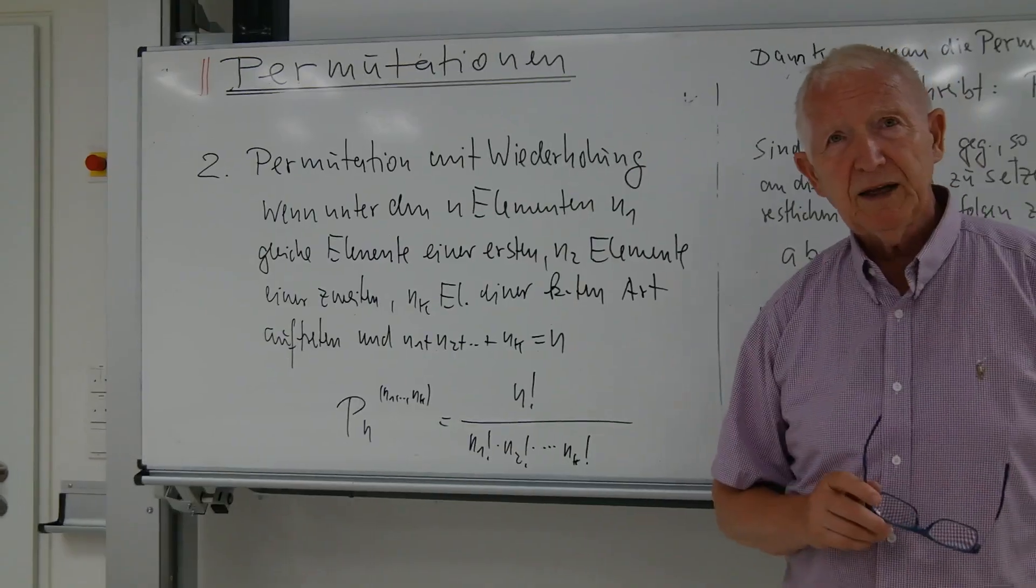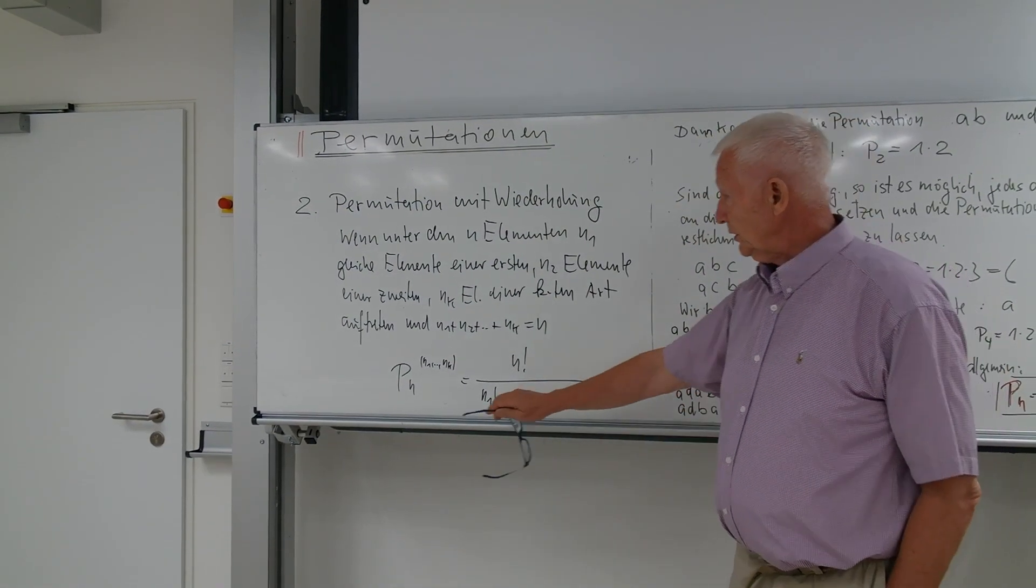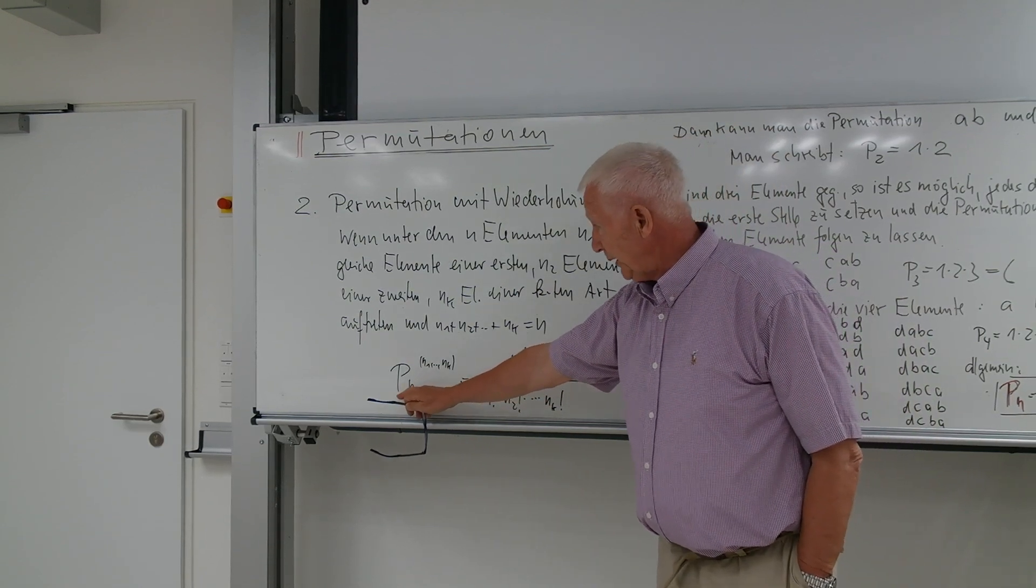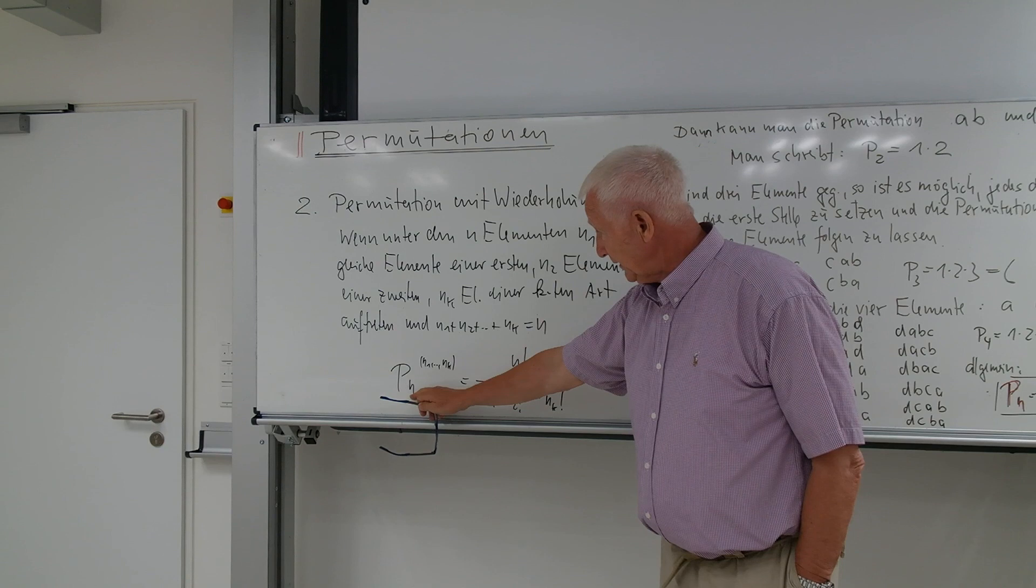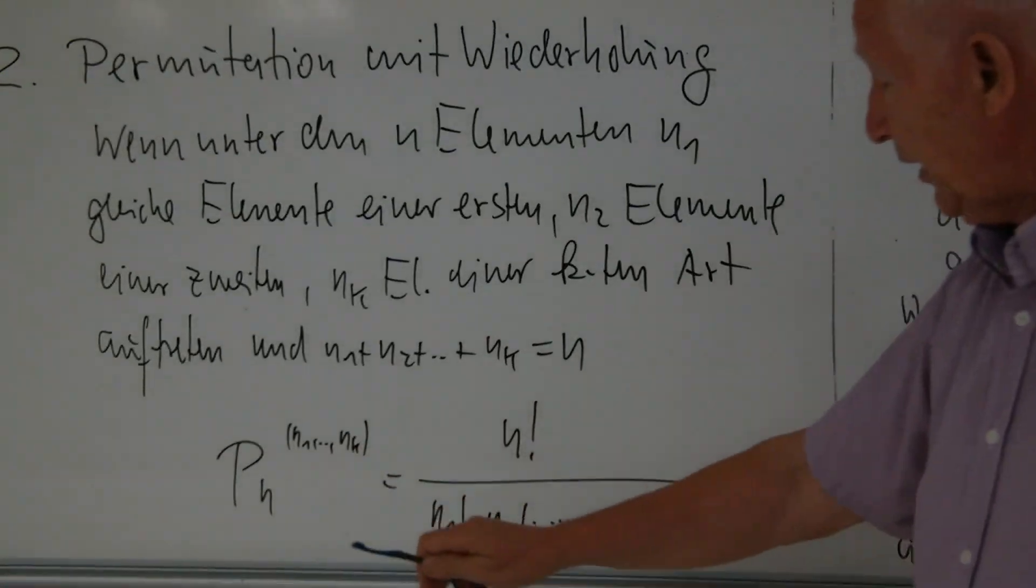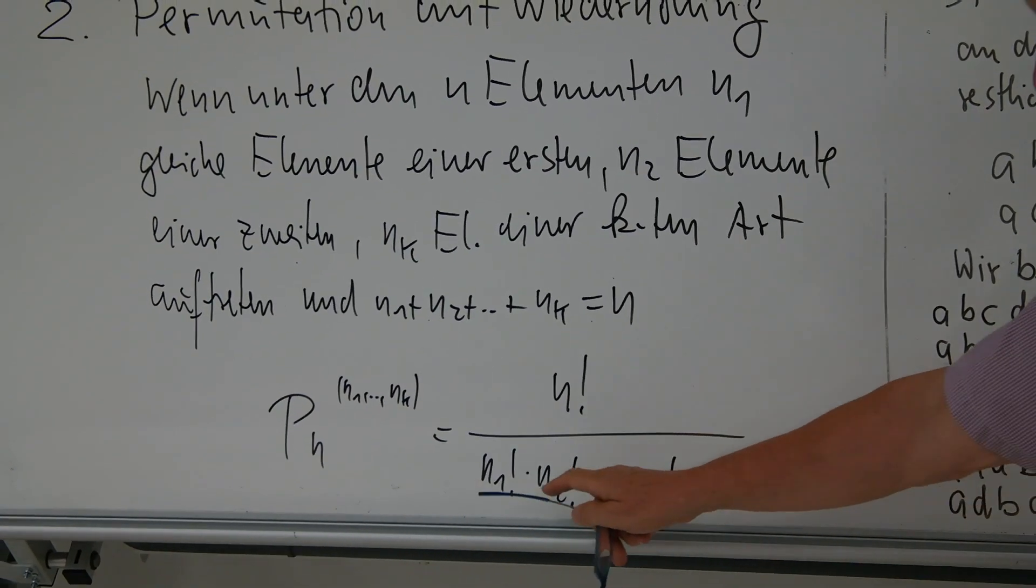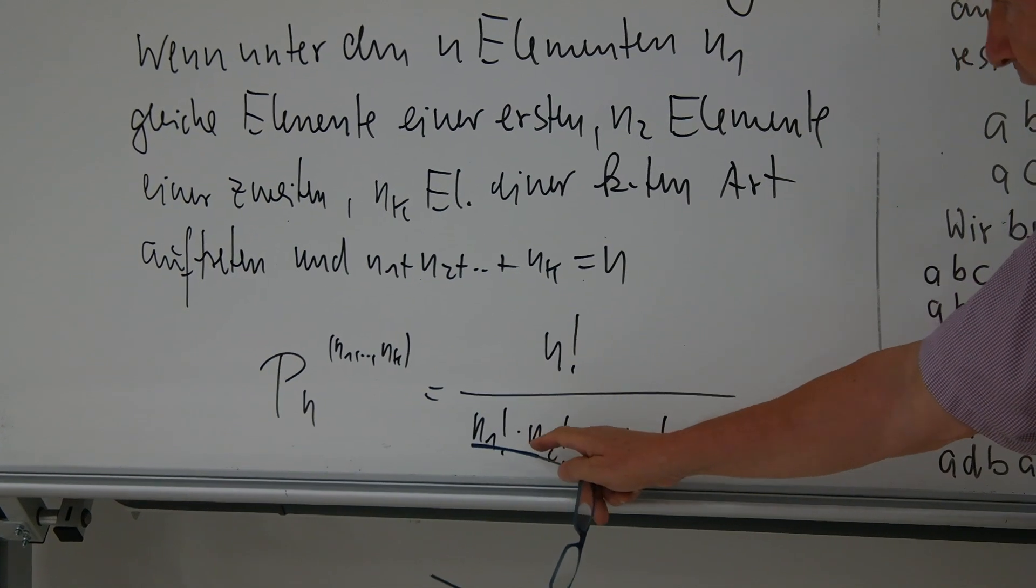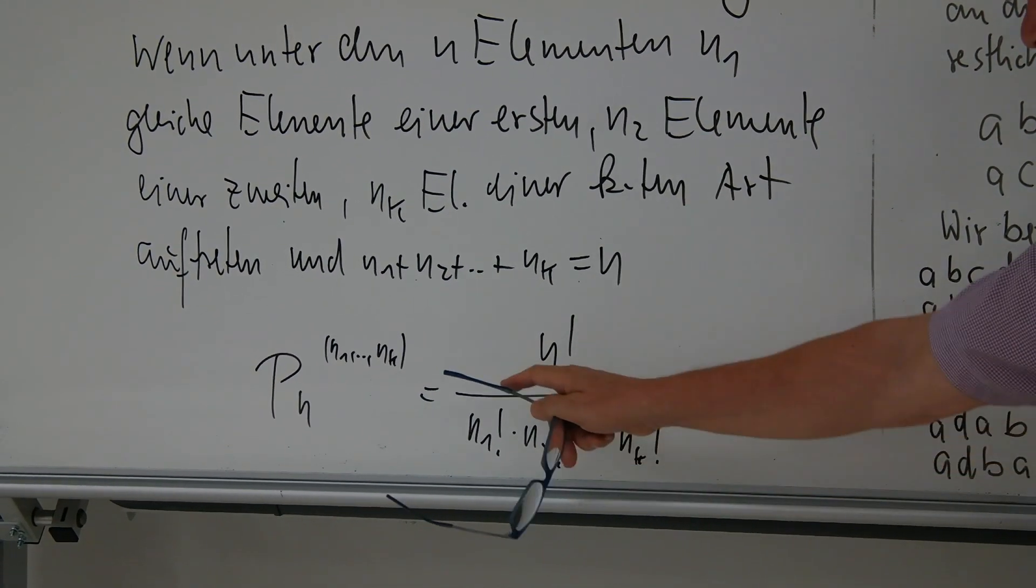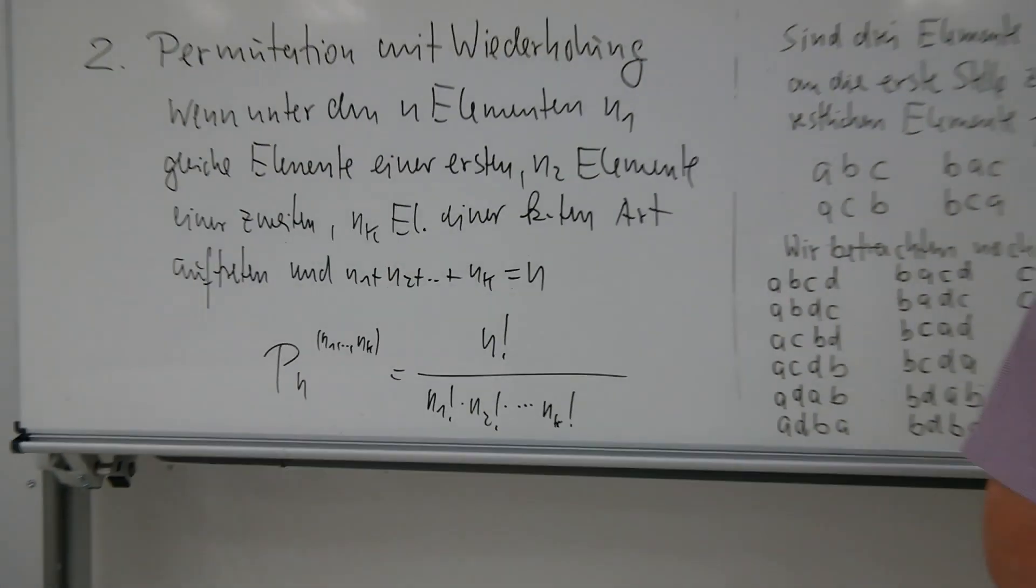dann berechnet man die Permutation mit Wiederholung nach folgender Formel. Die Permutation von n Elementen, wobei n1, n2 bis nk mehrfach auftreten, ist dann n Fakultät durch n1 Fakultät mal n2 Fakultät mal bis nk Fakultät. Ganz kurzes Beispiel dazu.